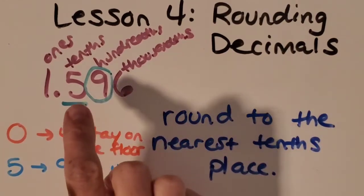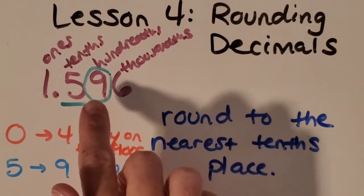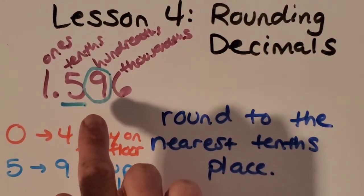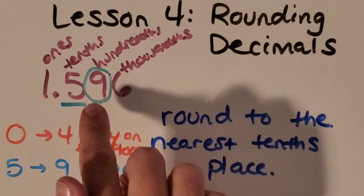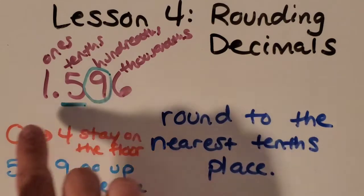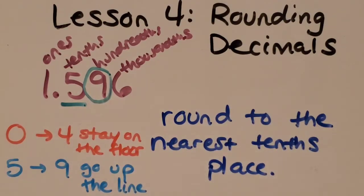Then what I do is I look at the number that I circled, in this case the hundredths place, so it's a nine there. That's gonna tell us what we want to do with our rounding. So here's my chant that I like to say that helps me remember. Zero to four, stay on the floor, five to nine, go up the line.